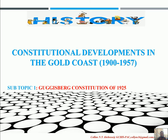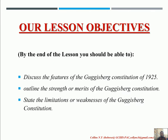So let's begin with our discussion for today. Now let's take a look at our lesson objectives. First, you should be able to discuss the features of the Guggisberg Constitution of 1925 when asked. Second, you should be able to outline the strengths or merits of the 1925 Constitution. What was good about the Constitution? And the last objective is the limitations or weaknesses of the Constitution — what do we find not good about it?